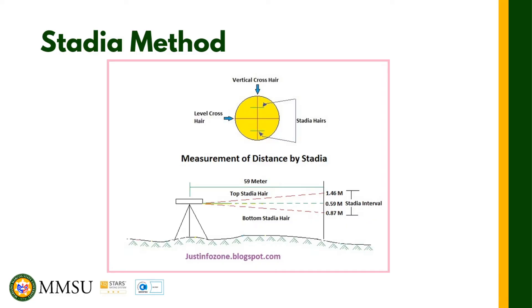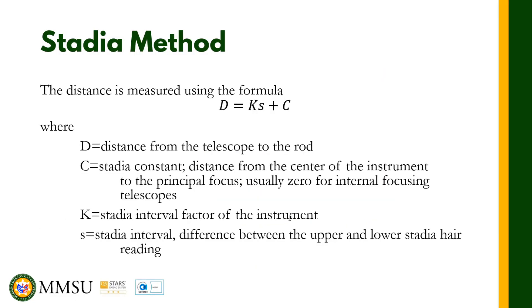The formula we are going to use is D equals kS plus C. D is the distance from the telescope or the instrument to the rod. C is the stadia constant — the distance from the center of the instrument to the principal focus. Usually the value of C is zero for an internal focusing telescope.